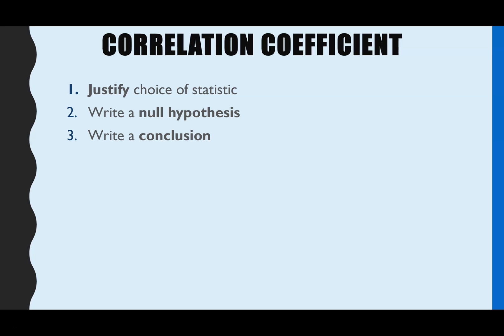Now for AQA you don't have to know how to do the statistic for the exam because that would take way too many minutes of a biology exam on maths. So instead what they state you need to be able to do is justify when you would use each statistic, so justify your choice. You have to be able to write a null hypothesis for the investigation. And then if they give you the statistic result you need to be able to write a conclusion.